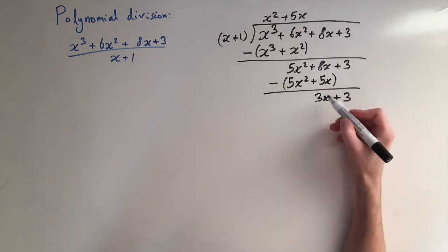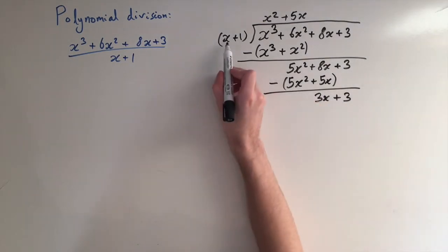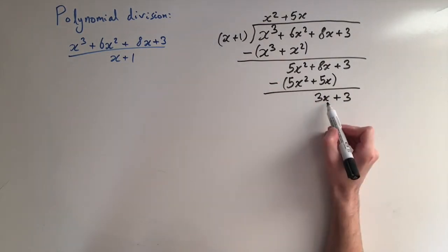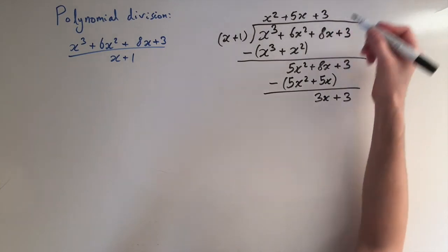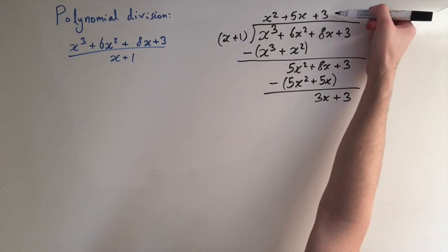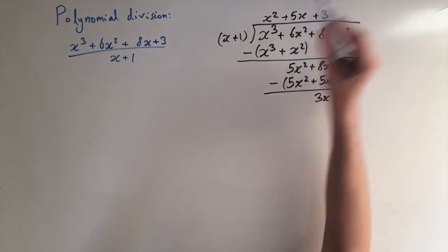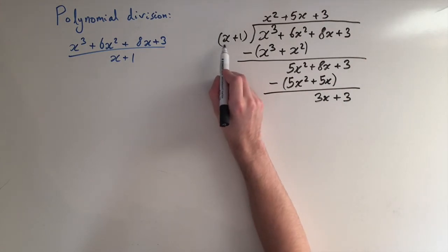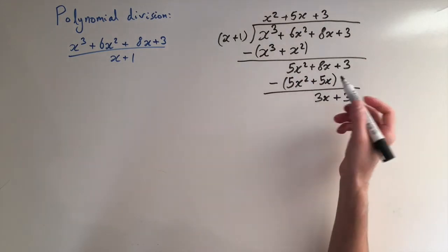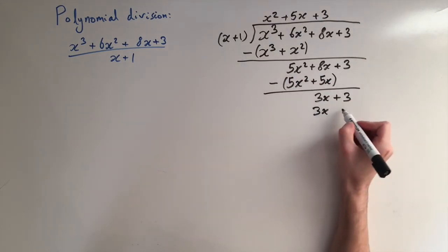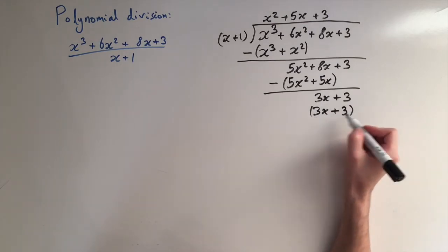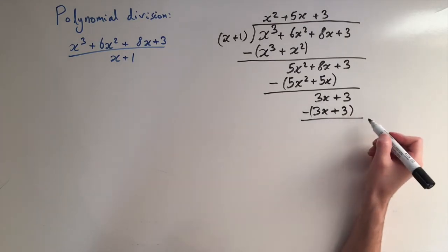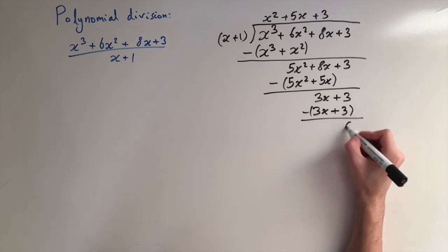One more time — we want to get rid of the x terms now. We divide 3x by x and we're left with 3, just a constant. Then we multiply this 3 by x plus 1, giving us 3x plus 3. When we subtract this from the previous line it just cancels perfectly and we're left with 0.